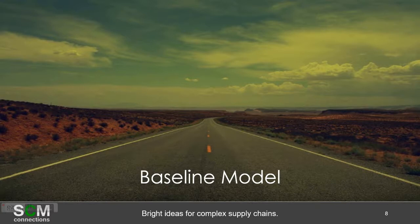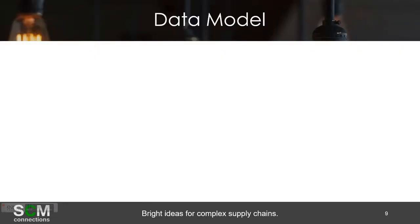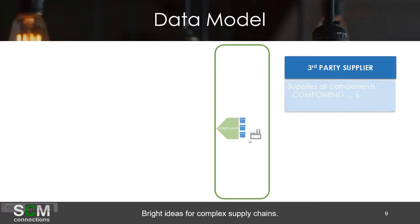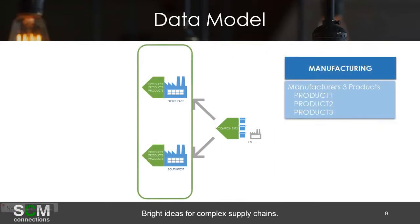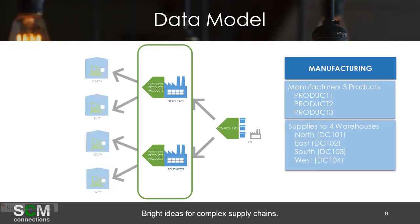Those of you who saw our videos on IBP S&OP, this baseline model will look relatively familiar. Our hope was to come up with a model that showed all the functionality IBP Inventory has to offer, while keeping it simple enough to follow the calculations. We have a third-party supplier that makes all the components, supplying two manufacturing plants — Northeast (plant 201) and Southwest (plant 202). Those two plants both make products 1, 2, and 3, and they supply to four warehouses: Northeast, South, and West.